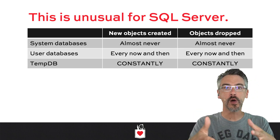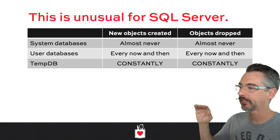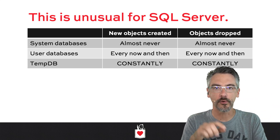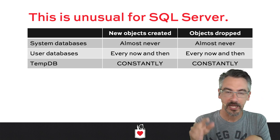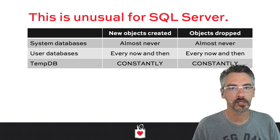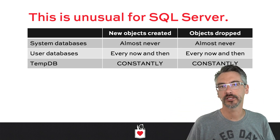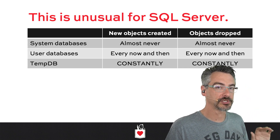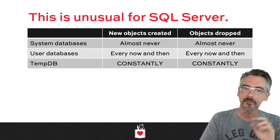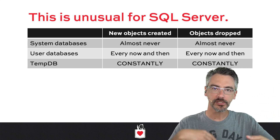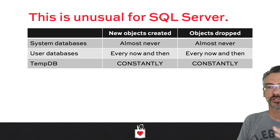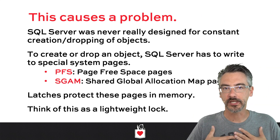If I think about how often new objects are created and old objects are dropped, that almost never happens in system databases. It's not like you've got users constantly going create table, drop table, create table, drop table like Kermit over on the keyboard. It might happen in user databases sometimes, but it's still fairly unusual. But in TempDB, this happens all the time - 24-7, SQL Server's in there continuously creating and dropping objects to support all of that activity. As a result, this causes a problem for SQL Server's internal architecture.